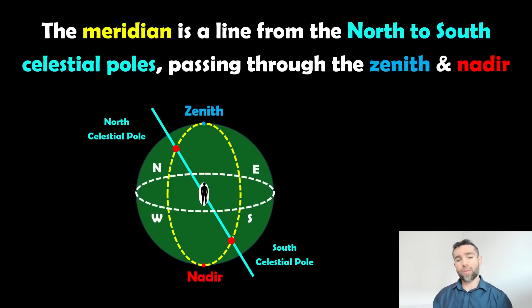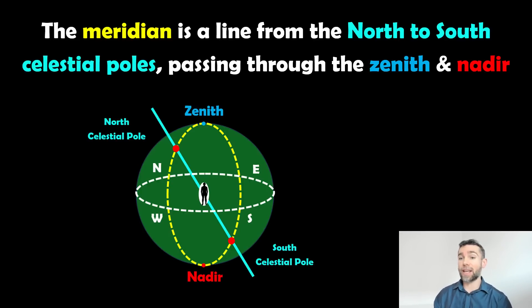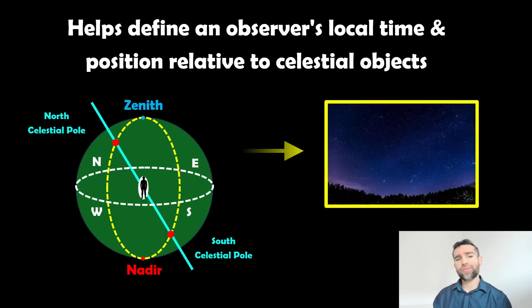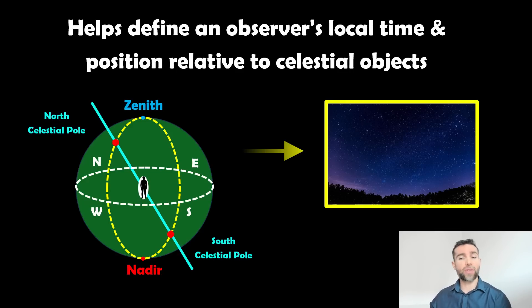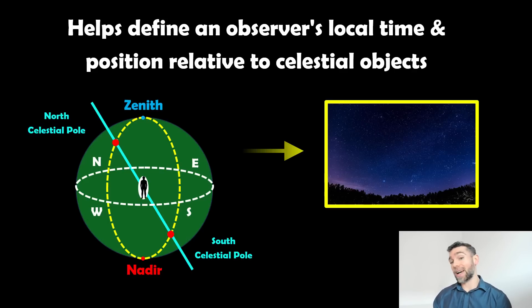So basically, ultimately, the meridian is a line. It goes from the north to south celestial poles, also passing through the zenith and the nadir of the local observer. And why is it useful? Well, it helps define the observer's local time position relative to celestial objects — it's a useful reference point.